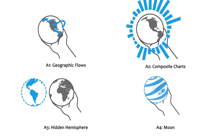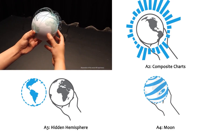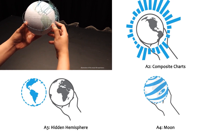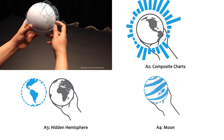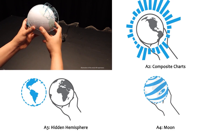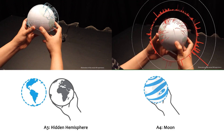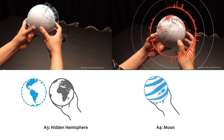Here I briefly show four use cases of the augmented globes category. The first use case shows geographic flows above the globe. These videos were created by combining footage from a camera with a rendering created from the tracked position and rotation of the tangible globe. The second use case, composite charts, utilizes the space around the tangible globe to show 2D billboarded bars that represent quantitative values of associated geographic points on the globe.